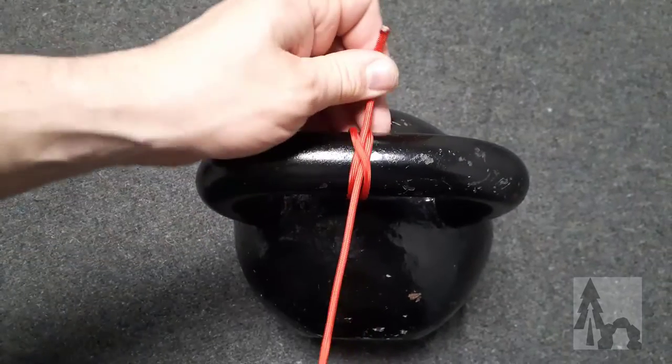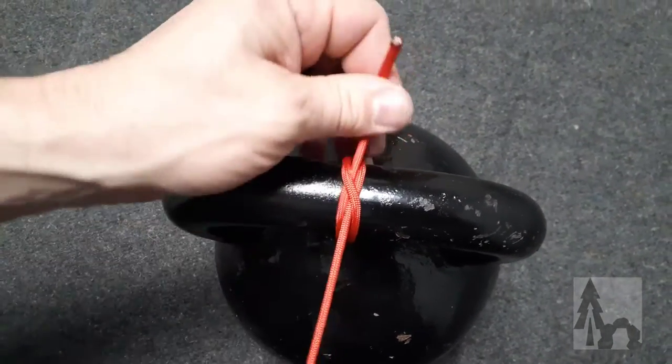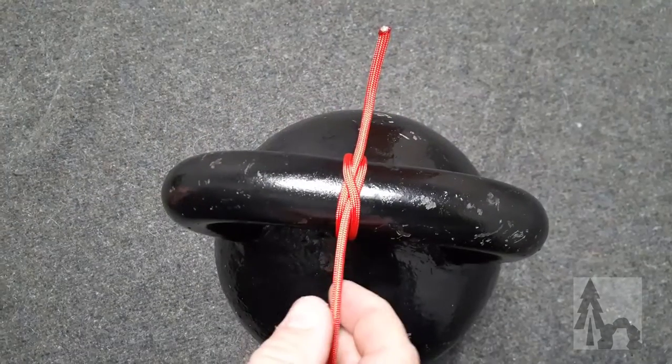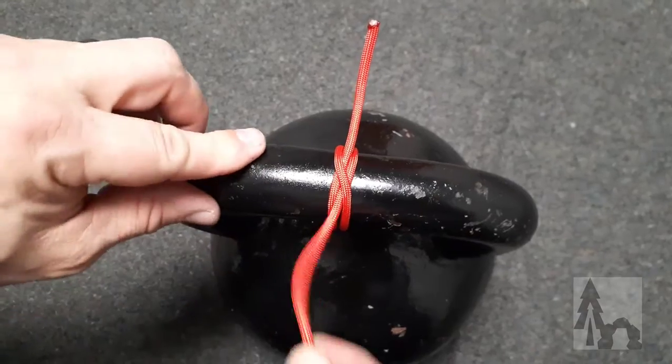Again, it's not something you trust your life to, but it's great for starting on lashings and hitchings and things. It's a little slippery on this metal handle, but on a tree it'll hold really well.